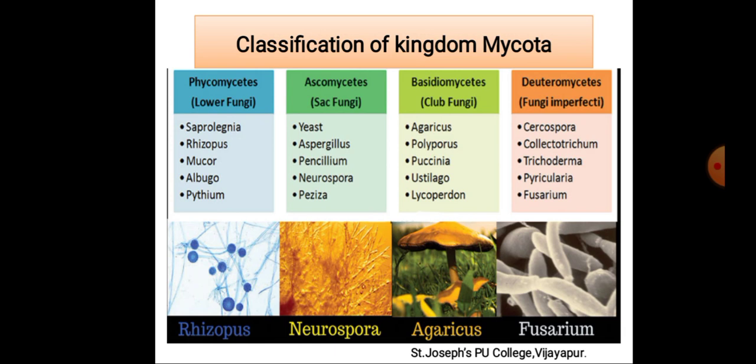As you see, the first class is Phicomycetes, or Lower Fungi, also called Algal Fungi. The second one is Ascomycetes, also called Sac Fungi. The third one is Basidiomycetes, also called Club Fungi. And Deuteromycetes, also called Fungi Imperfecti.